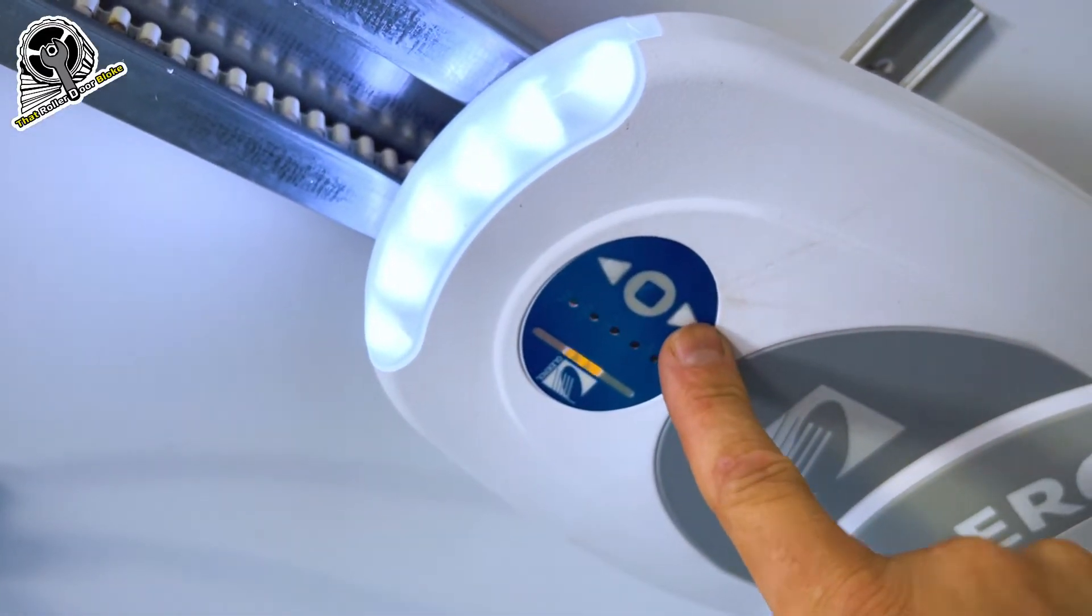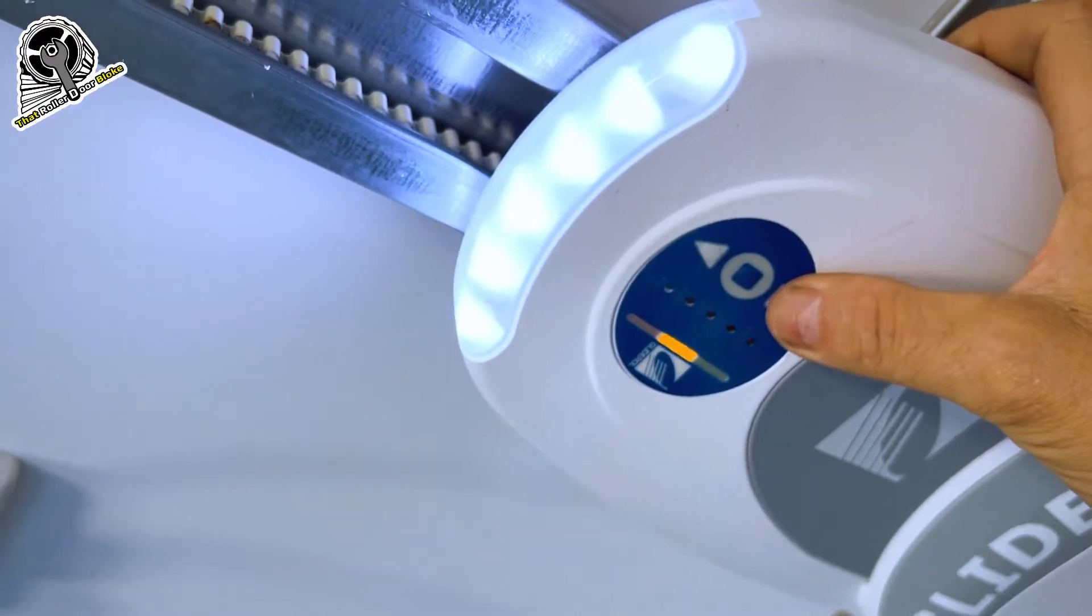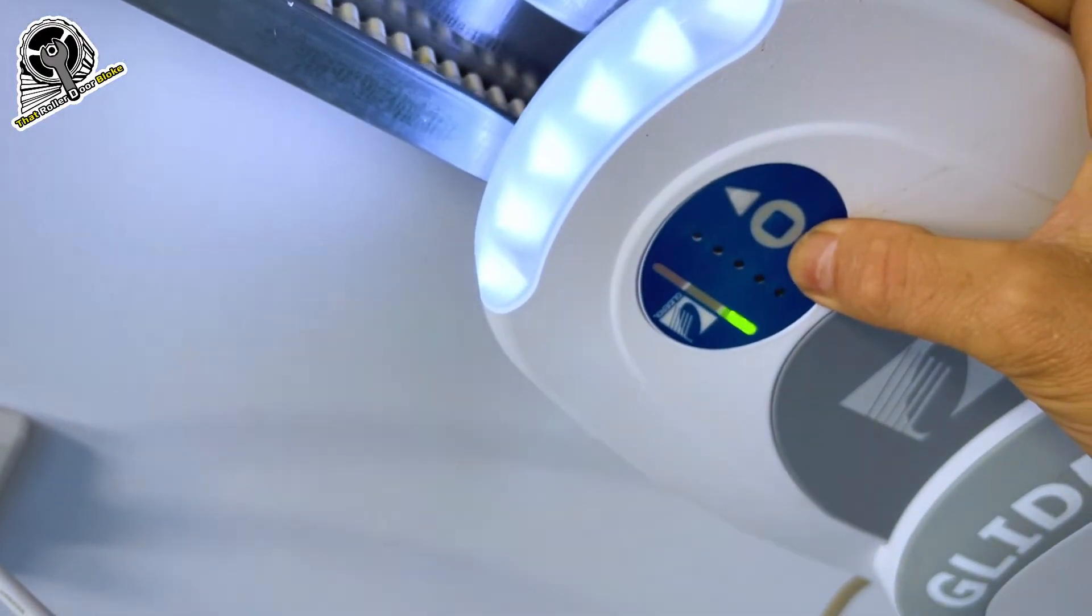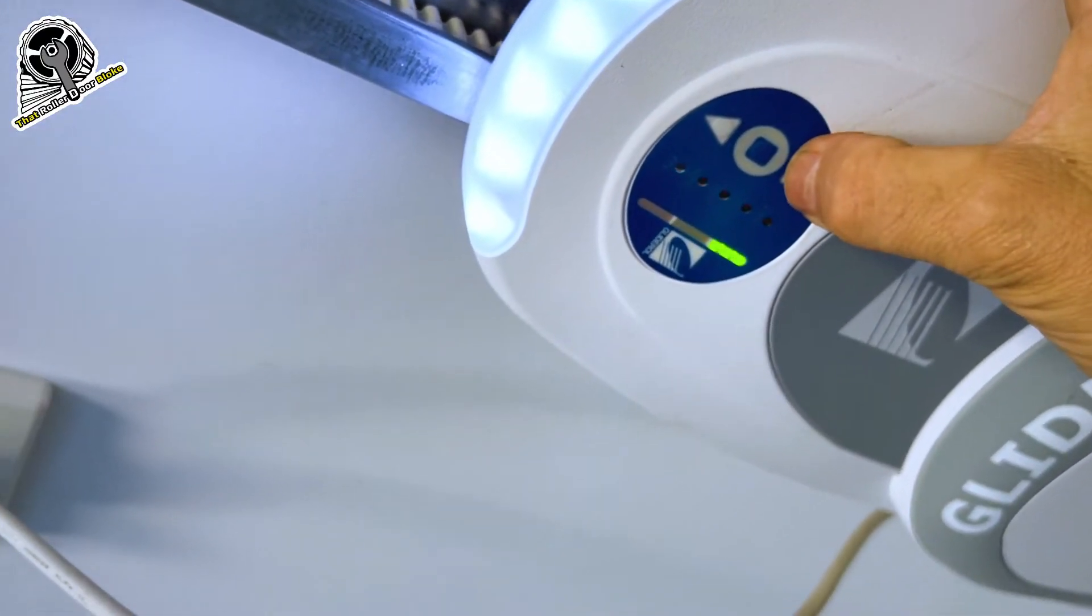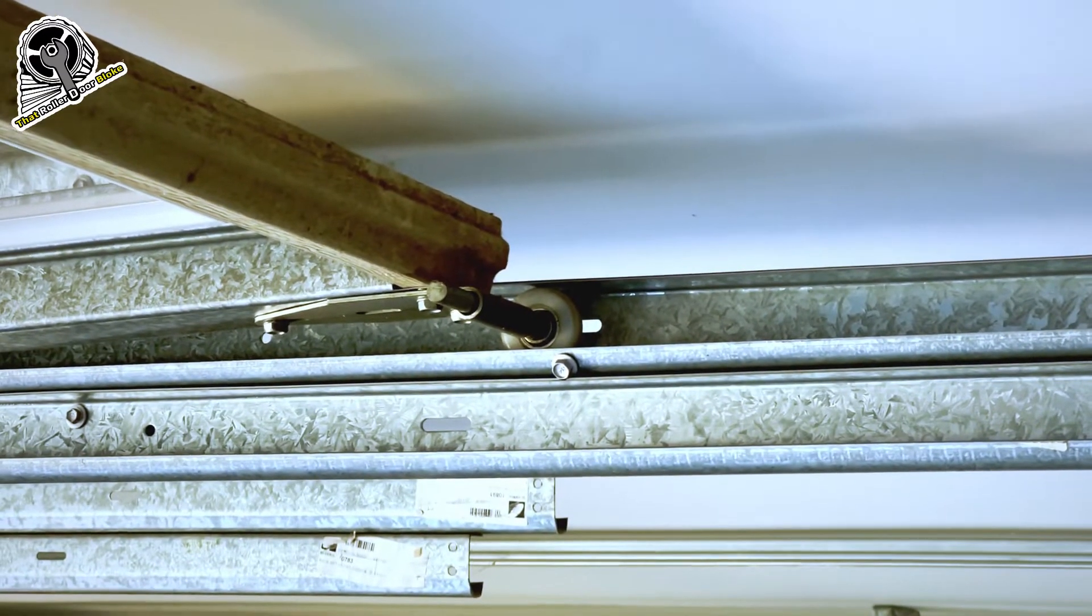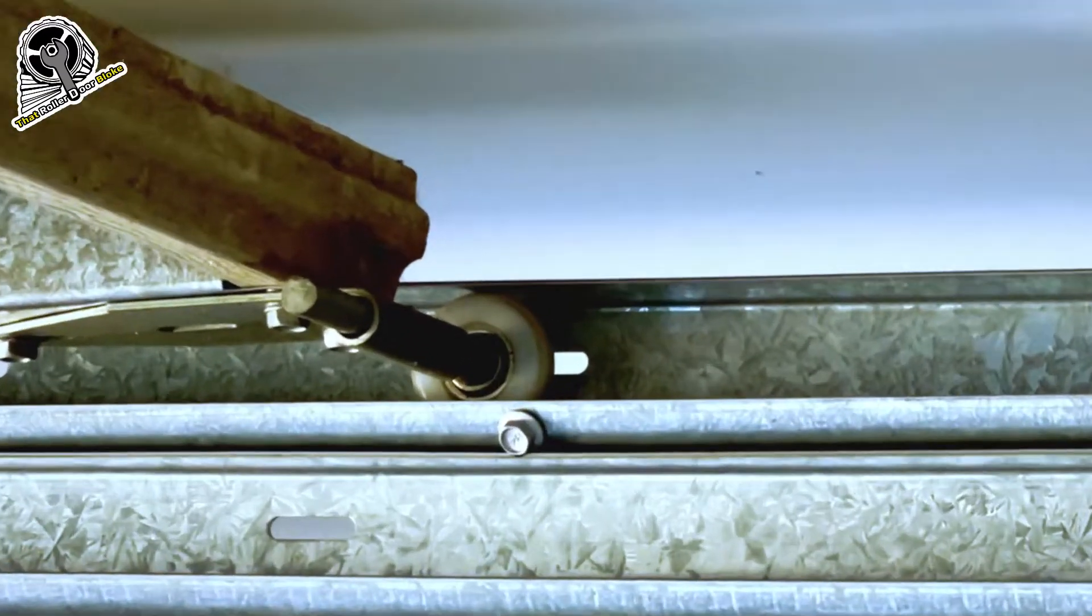So the first thing you want to do is set your open limit. Press the open button and keep your finger on that. You have the green LED bank show up. Now this door has a screw in the track as a stopper, so we're just going to butt the door against that.